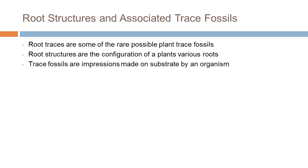Determining the difference between animal trace fossils and root structures is very challenging, mainly because the morphology of fossil root systems are more complex and difficult to understand than that of animal trace fossils. However, root traces are some of the very rare possible plant trace fossils that have been discovered.